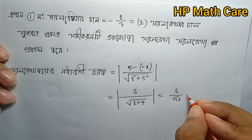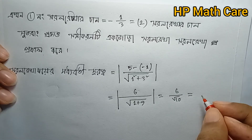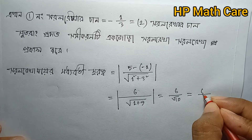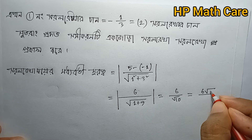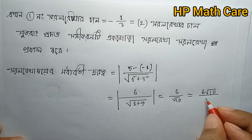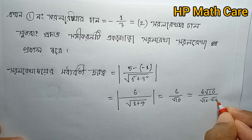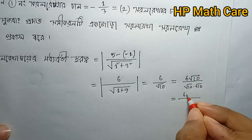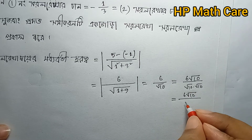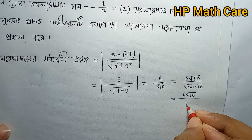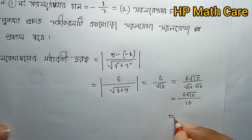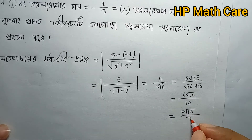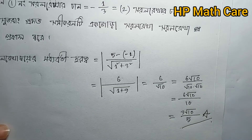So the distance simplifies: 6 over root 10. Rationalizing: 6 over root 10 equals 6 root 10 over 10 equals 3 root 10 over 5. So the final answer is 3 root 10 over 5.